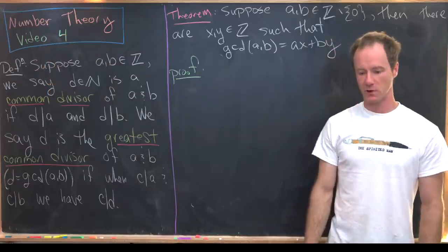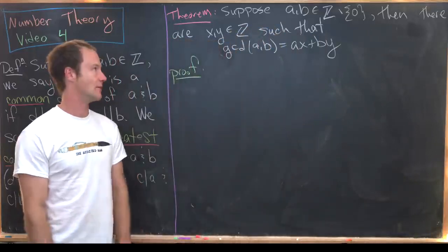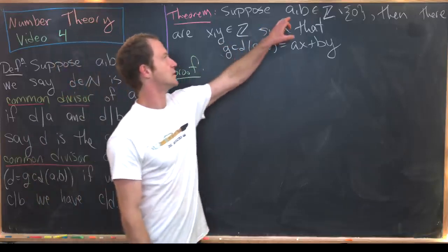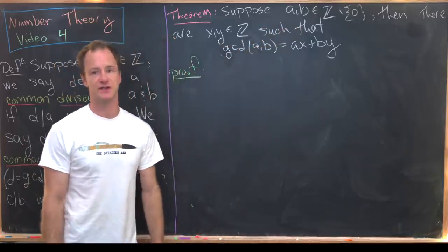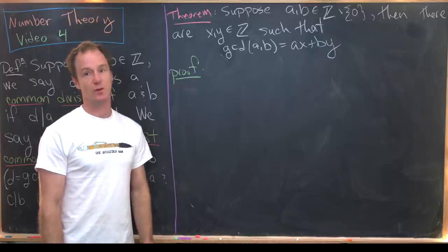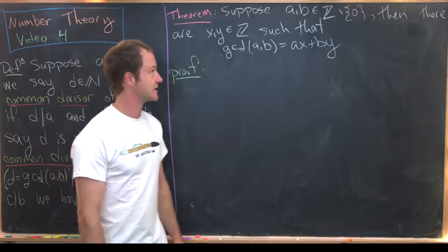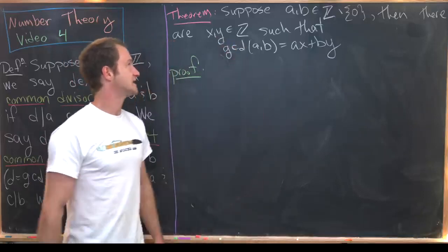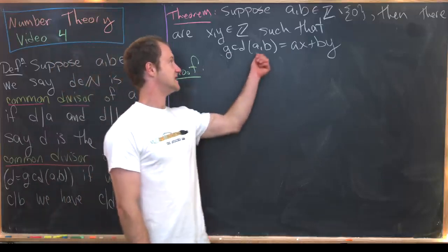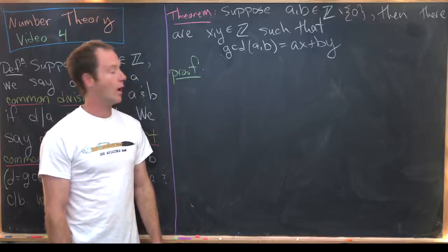The first theorem we want to look at is about writing the GCD of two integers as a linear combination of those two integers. So let's start by supposing we have non-zero integers a and b. Then there are integers x and y such that the GCD of a and b is equal to ax plus by.